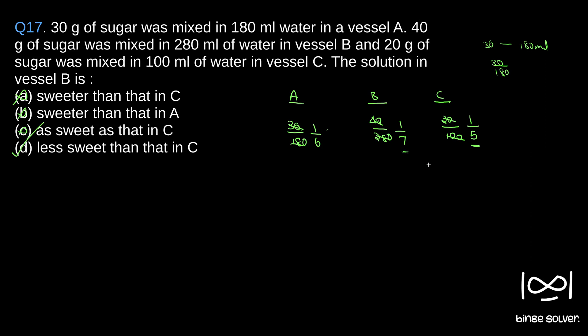1 by 7 is less than 1 by 5, so it is less sweet. Option D is the answer. The solution to Question 17 is D.